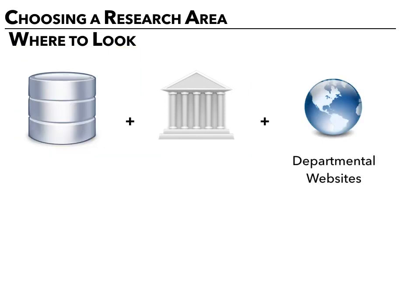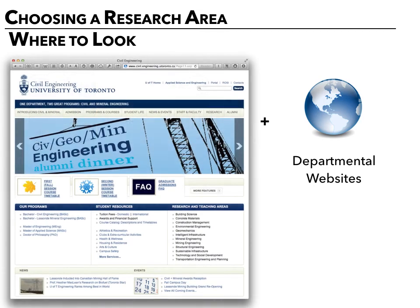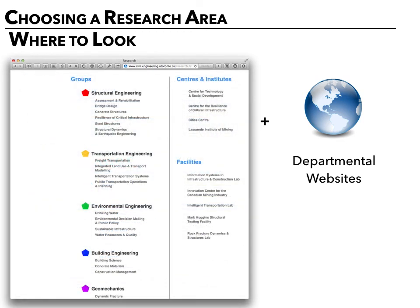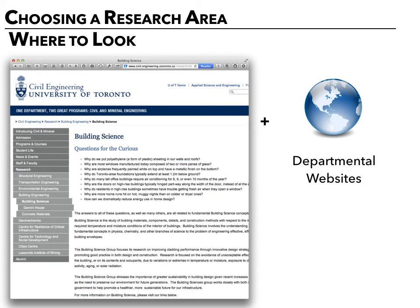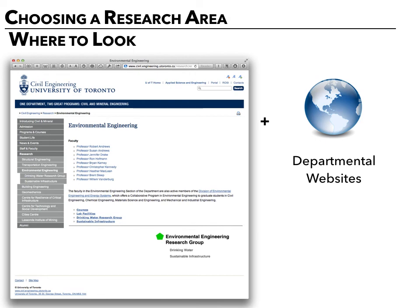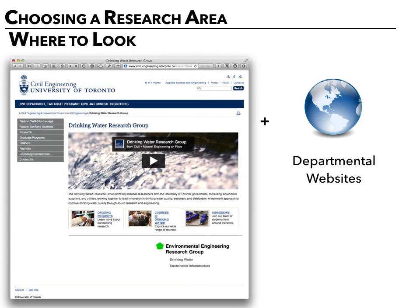Departmental websites are a really good place to start narrowing down a field of interest. For example, if you're interested in water studies, you would start with civil or mineral engineering — they have a list of research groups around various topics. You might look at environmental engineering and find a specific research group around the quality of drinking water, with faculty associated with that discipline. So you can really make use of departmental websites to narrow down an area or a set of people to get into contact with.